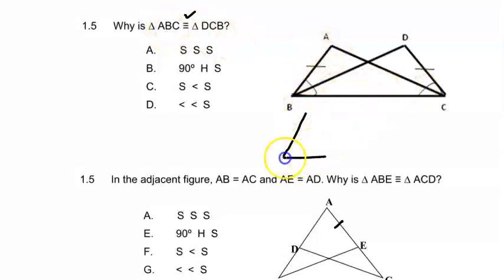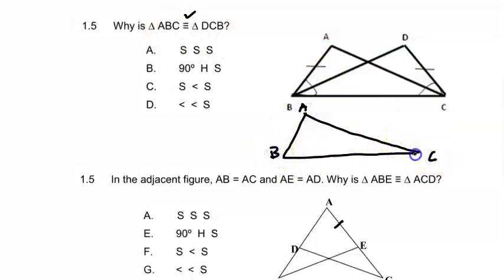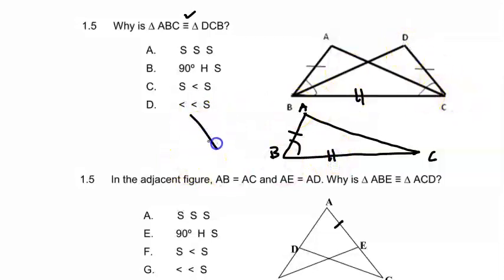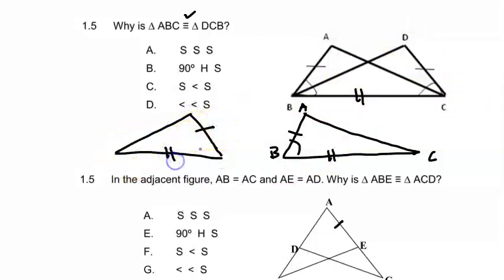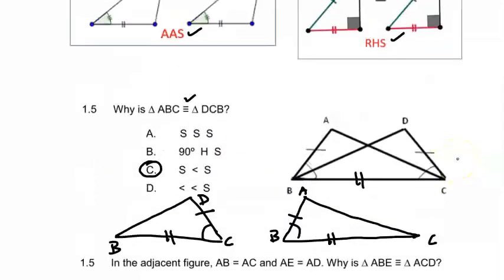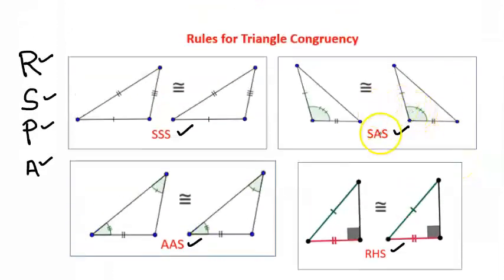Looking at triangle ABC, we can see that AB is a side and BC is a common side to both triangles. And if we look at triangle DCB, we have two sides which are equal and an included angle. Therefore, the answer would be side-angle-side — one of the cases of congruency.